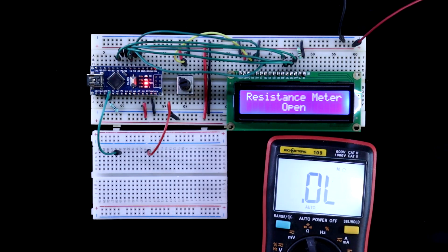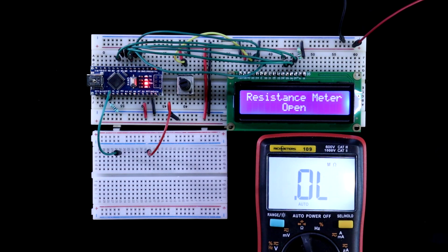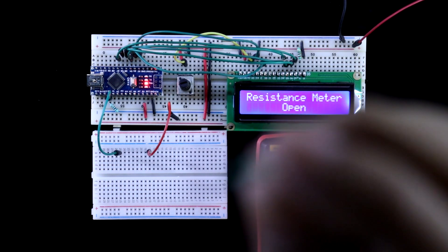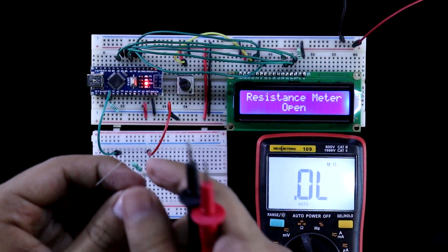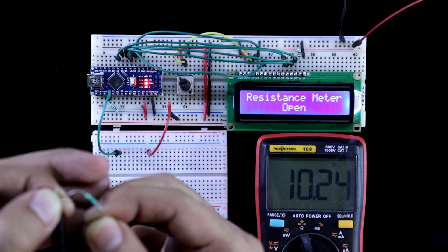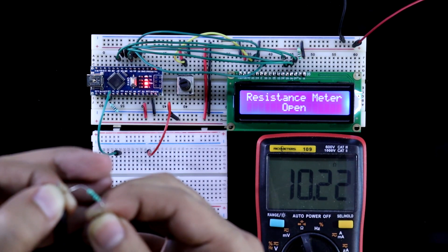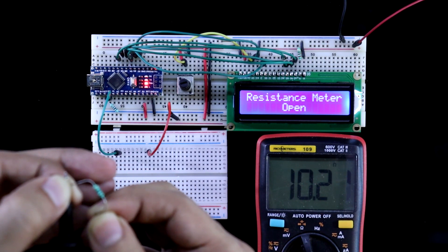Now I will test from the lower value to the higher value. Here I have taken 10 ohms resistor. If you measure the value with multimeter, it is showing 10.22.